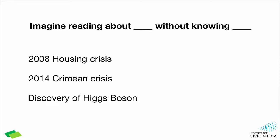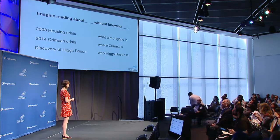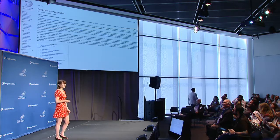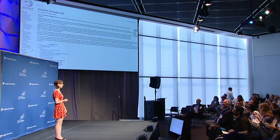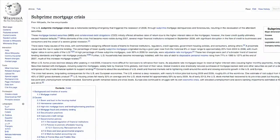Imagine reading about the 2008 housing crisis without knowing what a mortgage is, or the 2014 Crimean crisis without knowing where Crimea is, or even the discovery of the Higgs boson without knowing who Higgs boson even is. There are lots of places you can go to find this background information, but chances are you'll either get lost very soon and close that tab never to return, or you'll start clicking links and get lost very quickly, very far away from the story you started with.